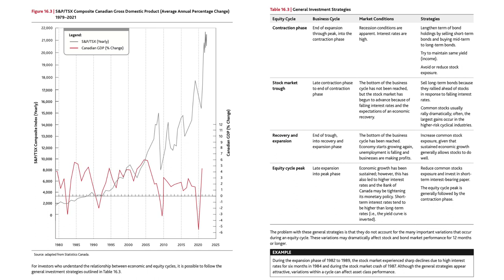For the recovery and expansion phase of the equity cycle, the business cycle is the end of trough into recovery and expansion. The bottom of the business cycle has been reached, the economy starts growing again, unemployment is falling, and businesses are making profits. The strategy here: increase common stock exposure, given that sustained economic growth generally allows stocks to do well.